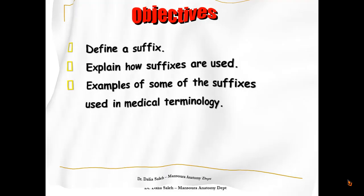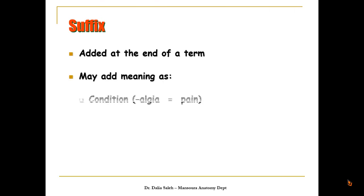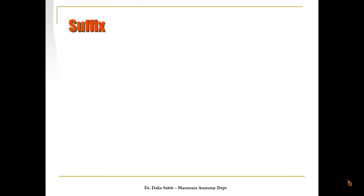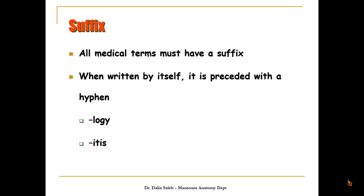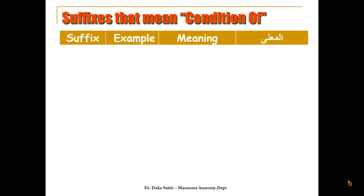A suffix is added at the end of a term and may add meaning — such as a condition, using the suffix '-algia' which means pain; or it may indicate a disease, like '-itis' which means inflammation; or a procedure, like '-ectomy' which means surgical removal. All medical terms must have a suffix, unlike the prefix which may or may not be present. When written by itself, the suffix is preceded with a hyphen, as in these examples.